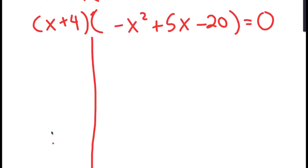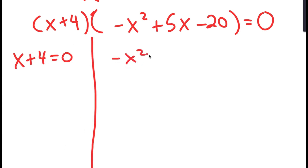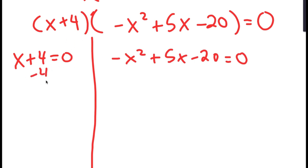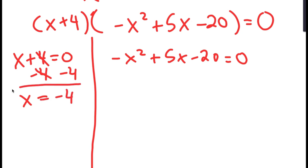So I get two equations from this. I get x plus 4 equals 0, and negative x squared plus 5x minus 20 is equal to 0. For x plus 4 equals 0, all we have to do is subtract 4 on both sides, and we get x is equal to negative 4.